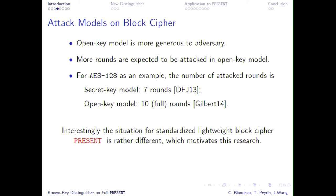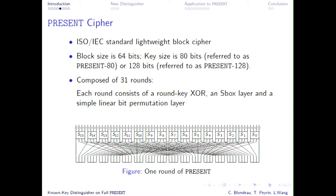The initial motivation of this work is that this wasn't really the case for PRESENT. For this cipher, we didn't really know how to exploit the additional knowledge of the key to attack more rounds. PRESENT is one of the first successful lightweight block ciphers — it was presented in 2007 at CHES by Bogdanov et al. It's a 64-bit cipher with a key size of 80 or 128 bits, though the key size doesn't matter much in this talk.